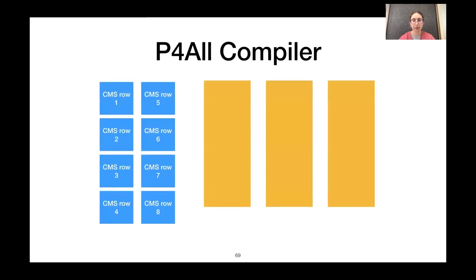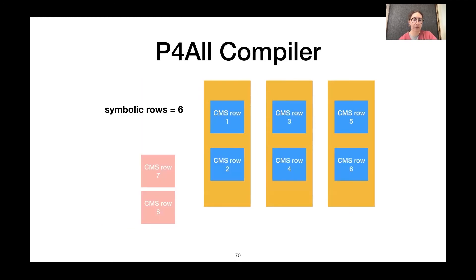So, our compiler is essentially solving a bin packing problem. We have three pipeline stages. And let's say we want to try to fit eight rows of our sketch onto those stages. Our compiler may find it can only fit six rows. So, we'll output six for the number of symbolic rows. And it will output this layout of two rows per pipeline stage.